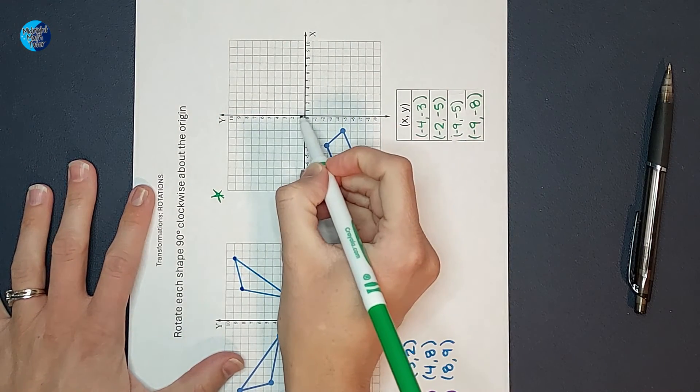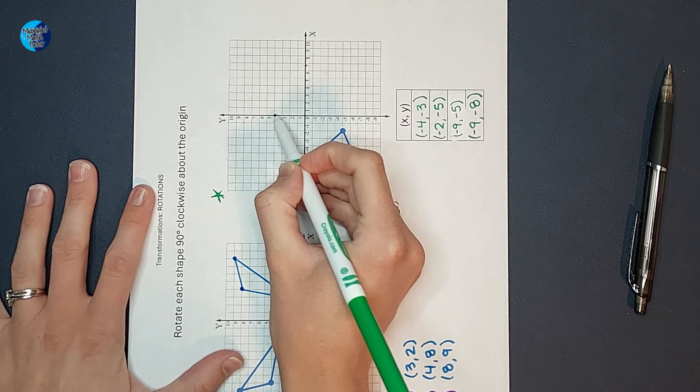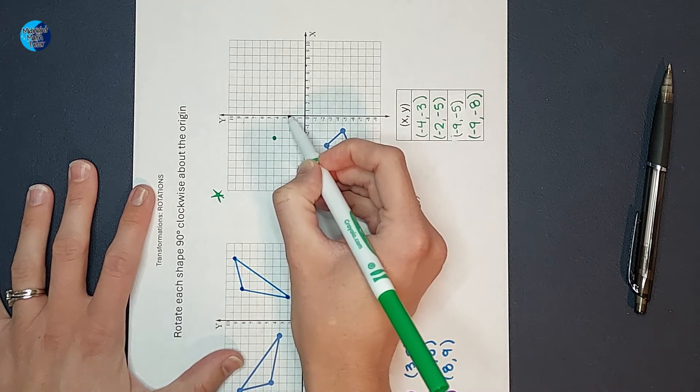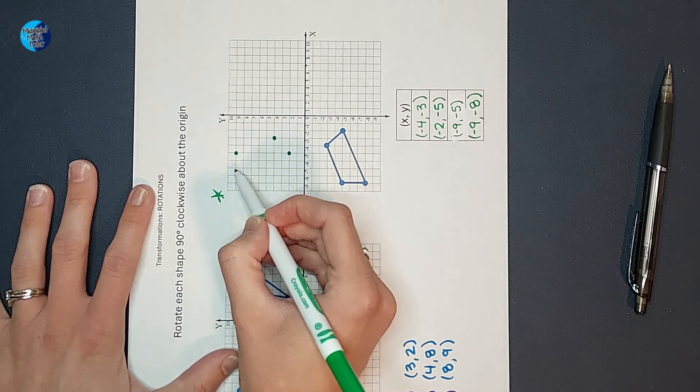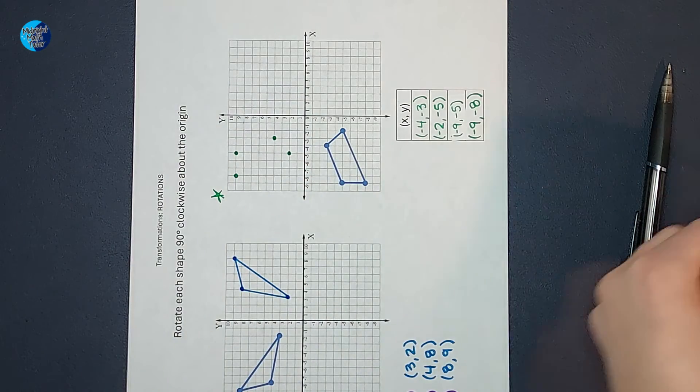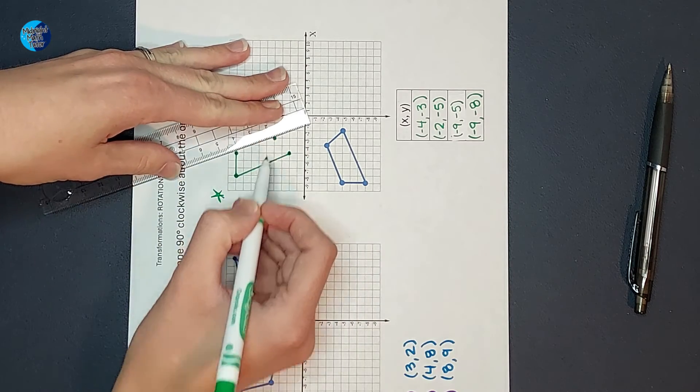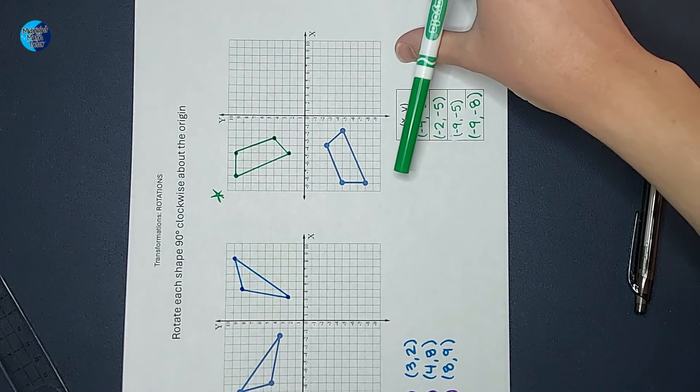So I get negative four, one, two, three, four, down one, two, three. There we go. And then I'm going to connect those dots. There we go.